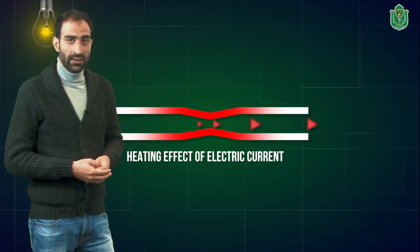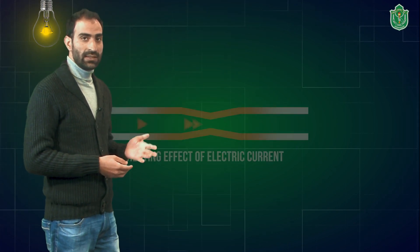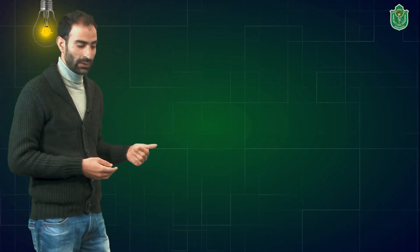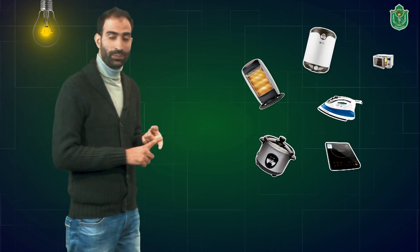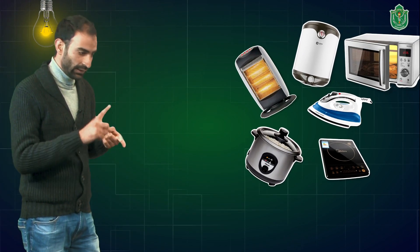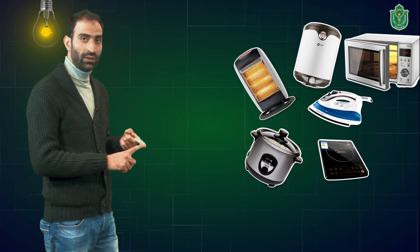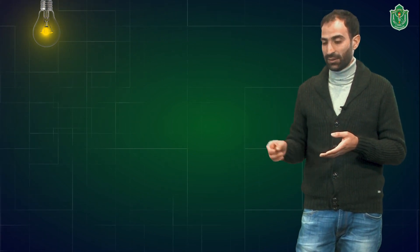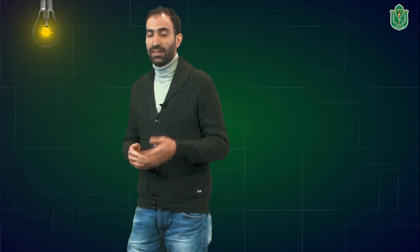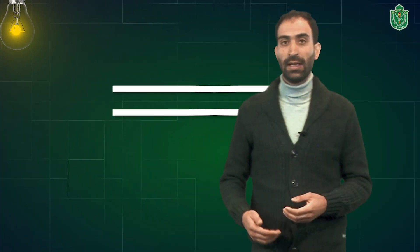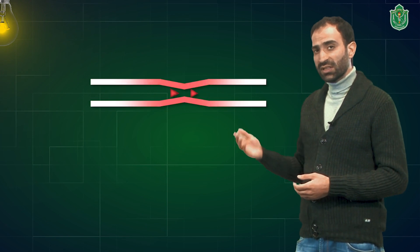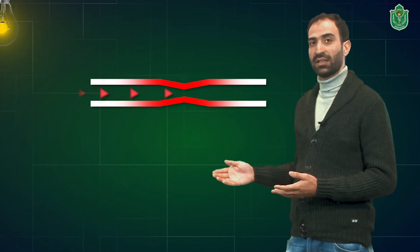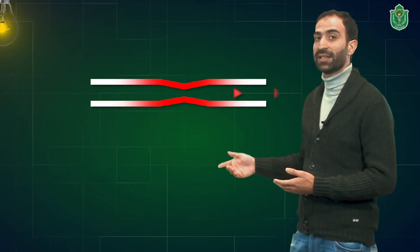You might have seen that there are various appliances that run on this effect or this principle — whether that is an electrical oven, an electrical geyser, an iron, or an electrical heater. All of these appliances run on the principle of the heating effect of current. When electric current passes through a conducting wire, this resistance converts the electrical energy into heat energy and the material becomes hot.